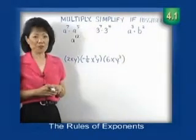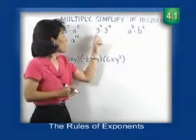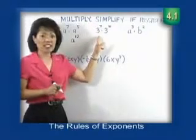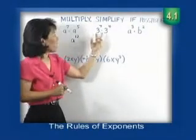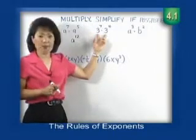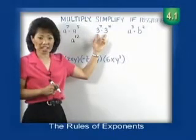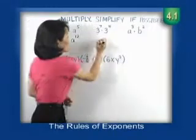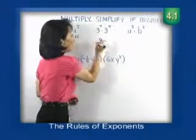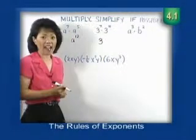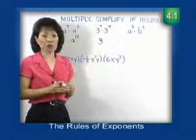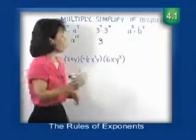Let's move on to our second problem. Here we have 3 to the seventh times 3 to the fourth power. Again, we identify the bases to be the same — they're both 3. So we write the 3, and how many 3's do we have? We have 7 plus 4, or 11. So the answer is 3 to the eleventh power.